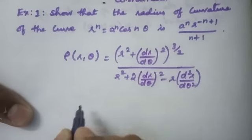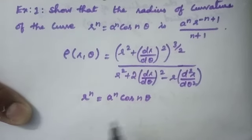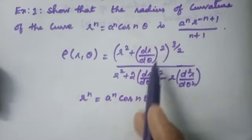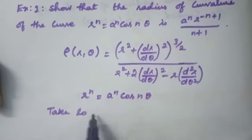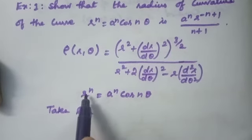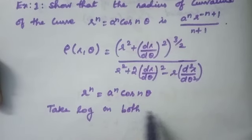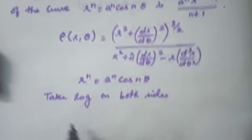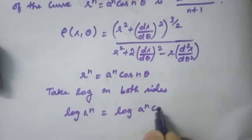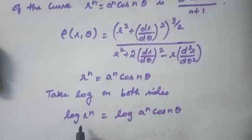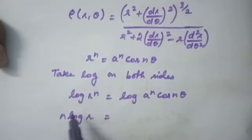The problem given is r^n = a^n cos(nθ). We need to find dr/dθ. Take logarithm on both sides. You will get log(r^n) = log(a^n · cos(nθ)), which gives n·log(r) = n·log(a) + log(cos(nθ)), using the basic logarithm results.